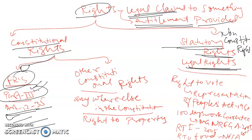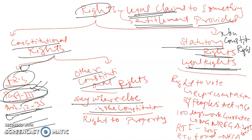All those rights provided under Part 3 of the Indian Constitution from Article 12 to 35 are fundamental rights. Apart from these, there are other constitutional rights that are provided in the Constitution but outside Part 3 — they are found anywhere else in the Constitution. These are constitutional rights but not fundamental rights.